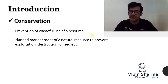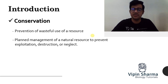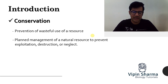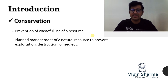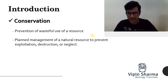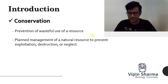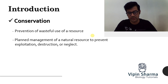That means we are not exploiting it, destructing it, or neglecting that resource. So if you combine this term conservation with biodiversity it becomes biodiversity conservation — that means we are preventing wasteful use of any of the life forms on the planet, and for that we are not exploiting, destructing, or neglecting that biological resource.